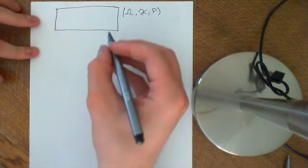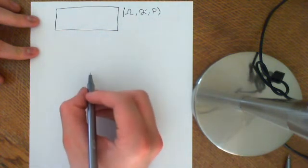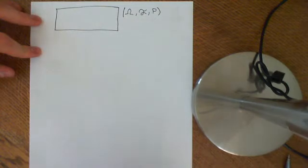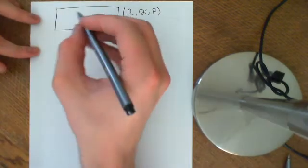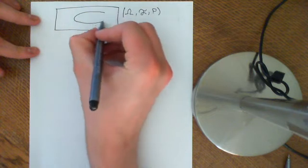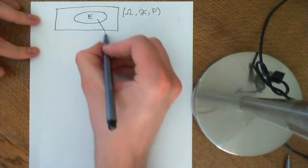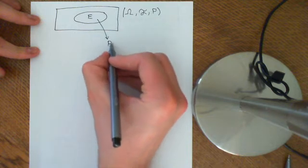Then we know that we can set up a mapping, we can set up random variables on here. The concept of an indicator random variable is basically take any event you want, which is going to be e, and that has some probability.